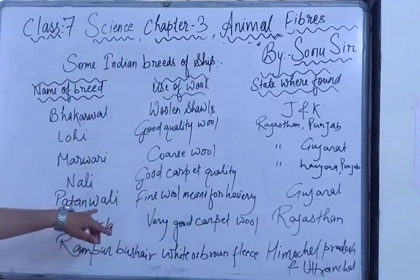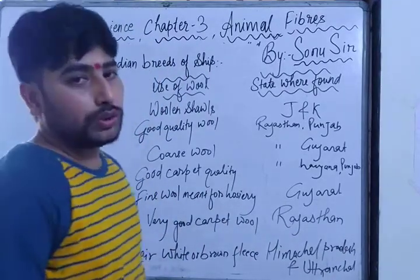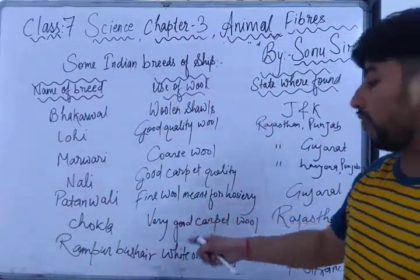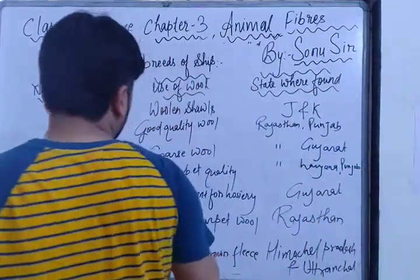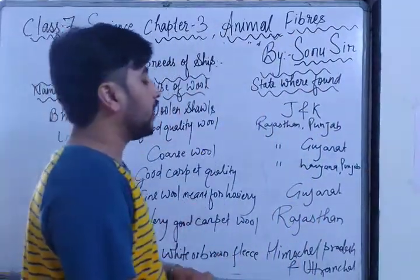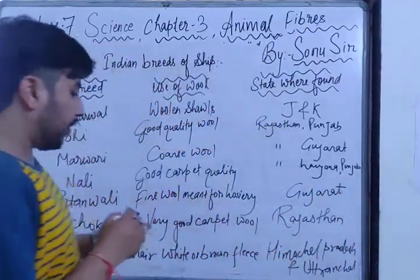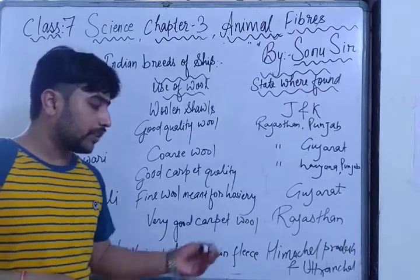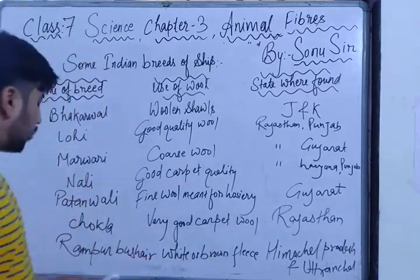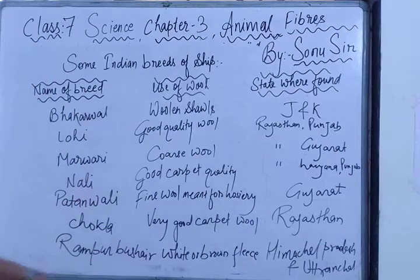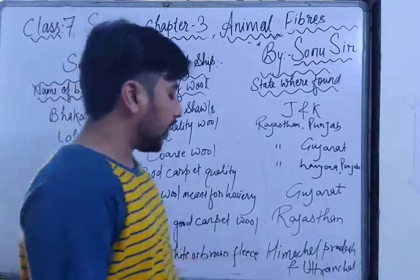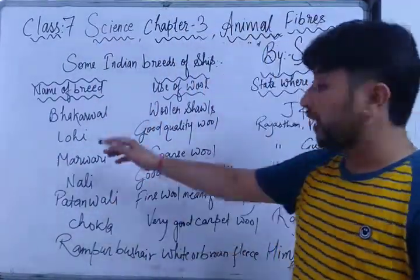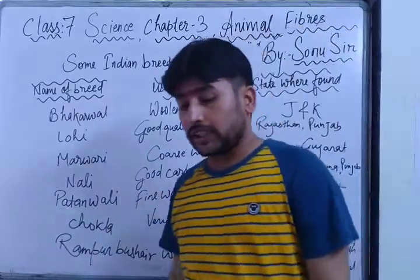Patanwali is a fine wool and is found in Gujarat. Chokla is a very good carpet wool and is found in Rajasthan. Rampur Bhushar has a white-brown fleece and is found in Himachal Pradesh and Uttarakhand. These are some of the sheep breed names, the uses of their wool, and the states where they are found.